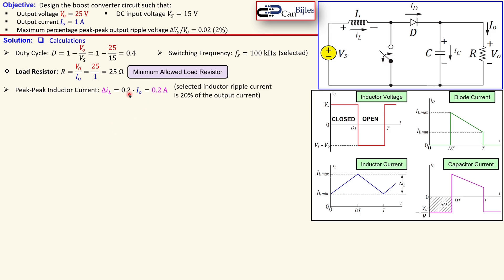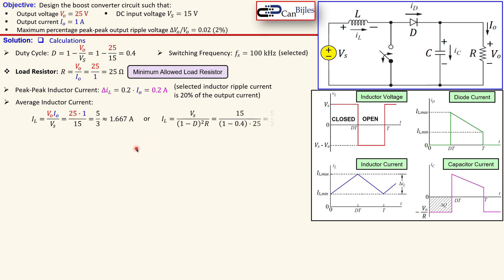This 20 percent is also arbitrary — you can take 10 percent or 30 percent, it doesn't really matter in most cases. The average inductor current is given by this expression from the power balance: the inductor current equals the output voltage times output current divided by the source voltage. So it will be 25 times 1 over 15 — which is 5/3 amps or approximately 1.667 amps. You see here the input voltage, the duty cycle, and the resistor all producing the exact same result.